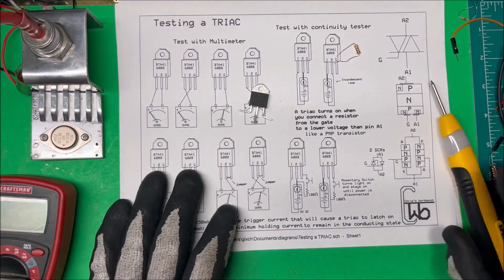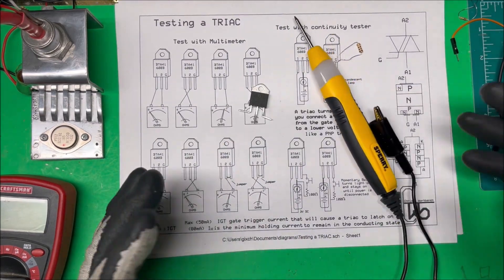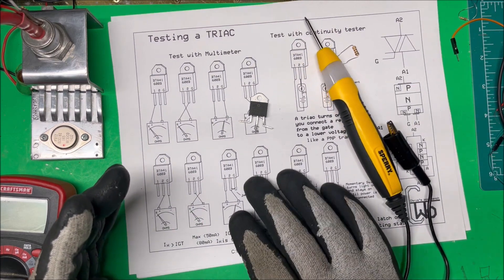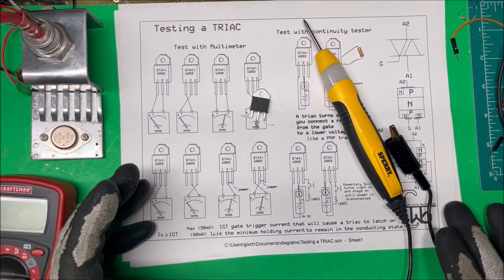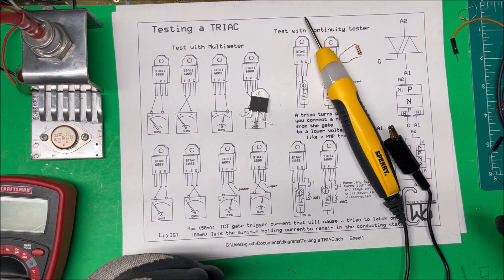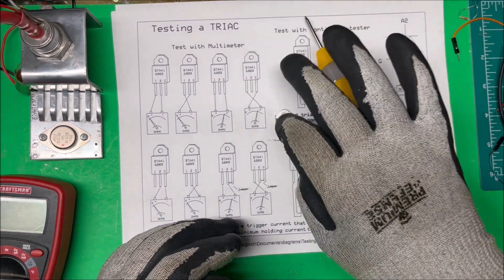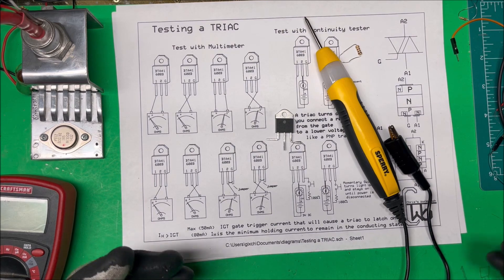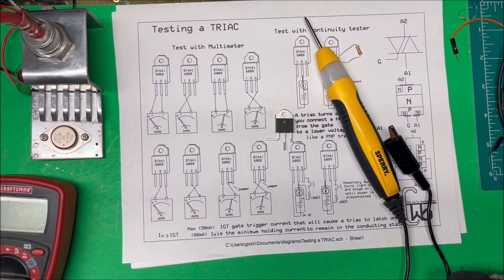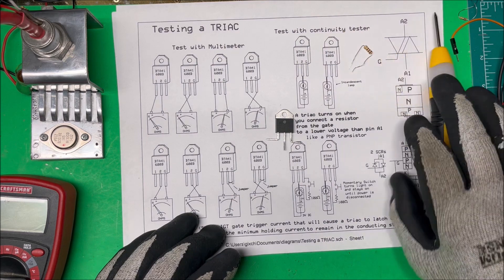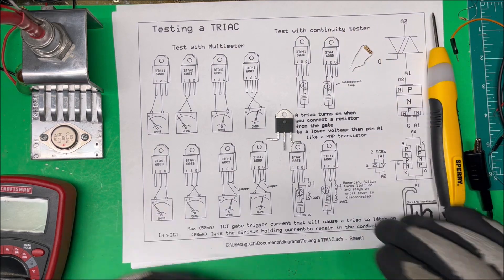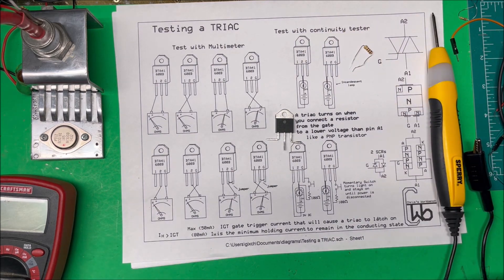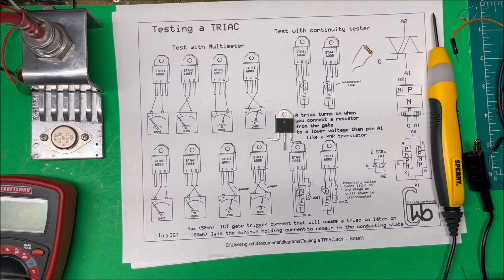So that's the way I like to test a TRIAC. That way you get to put some load on it. In the datasheet, you can tell what your IGT is supposed to be and what your holding current is supposed to be. This one works—it latches in and stays on until you remove the power. I'll put this diagram in the description. Thank you.